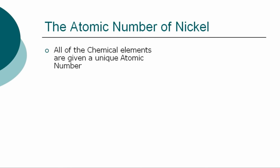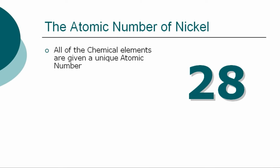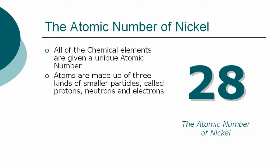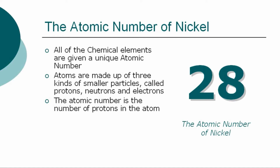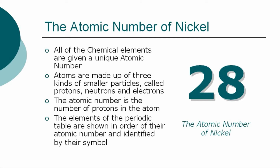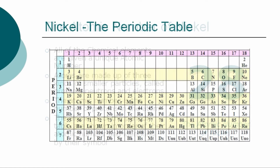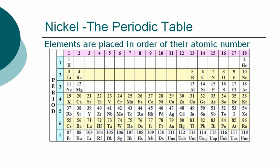All of the chemical elements are given a unique atomic number. The atomic number for nickel is 28. Atoms are made up of three kinds of smaller particles, called protons, neutrons, and electrons. The atomic number is the number of protons in the atom. The periodic table is a chart showing the symbols and the atomic numbers of all known elements, such as nickel, in one large grid.